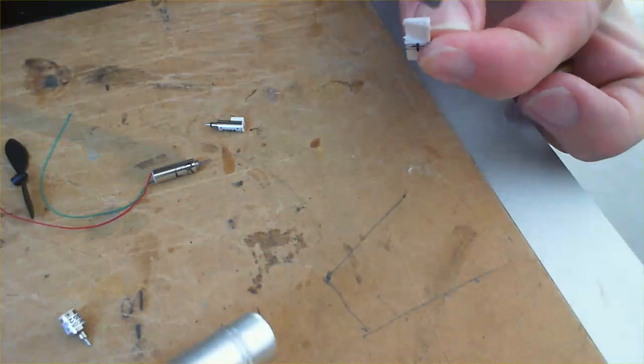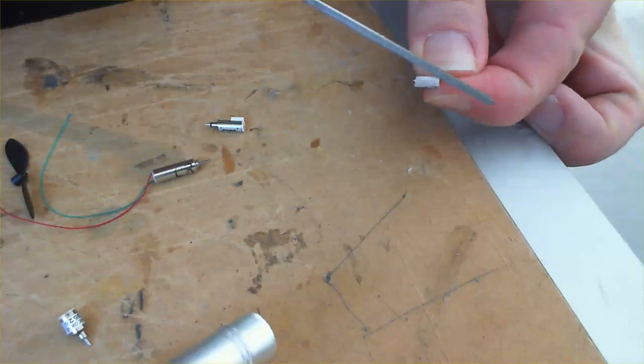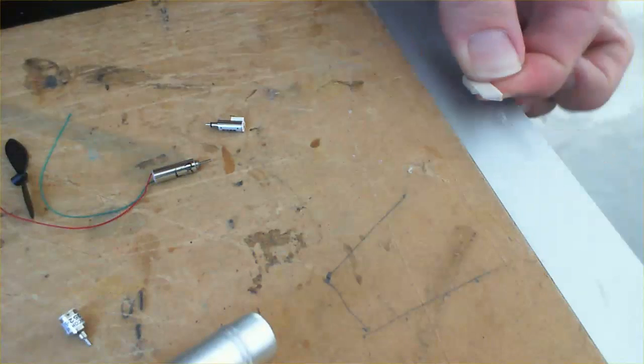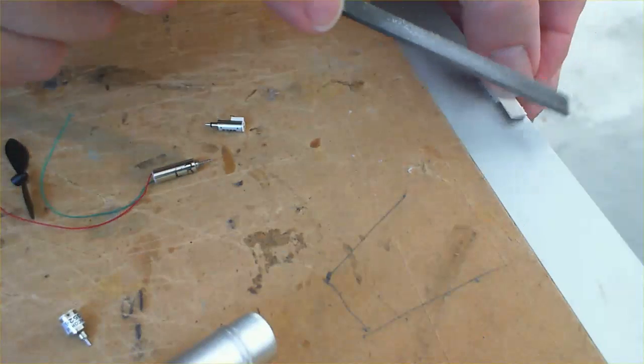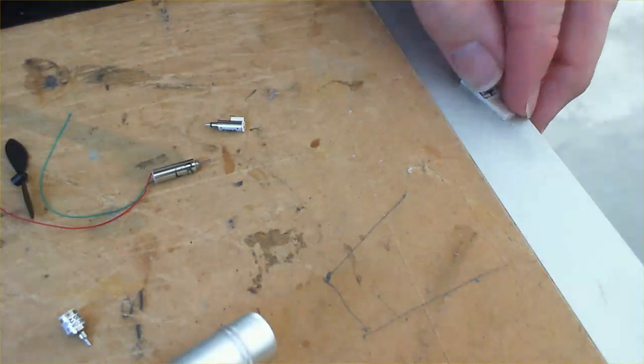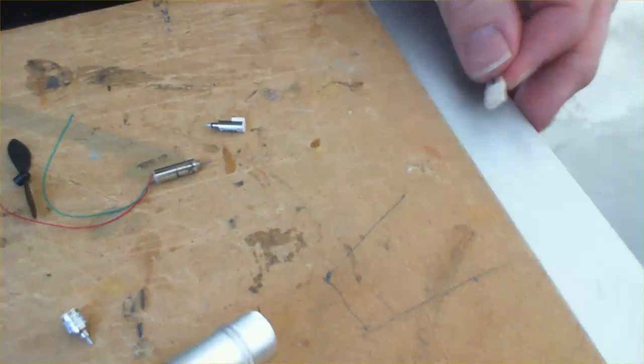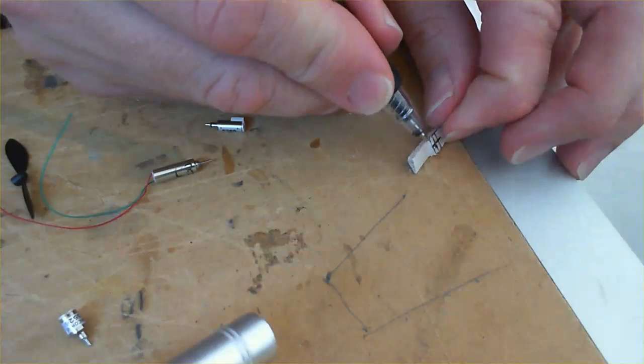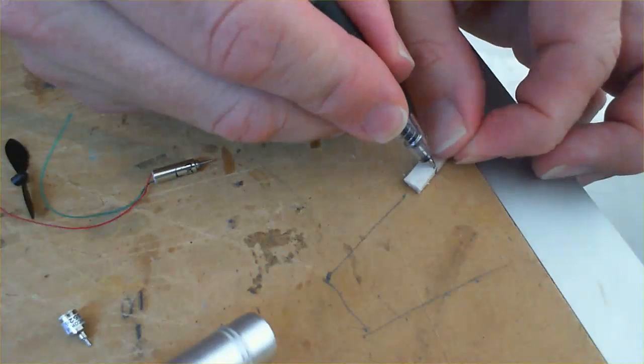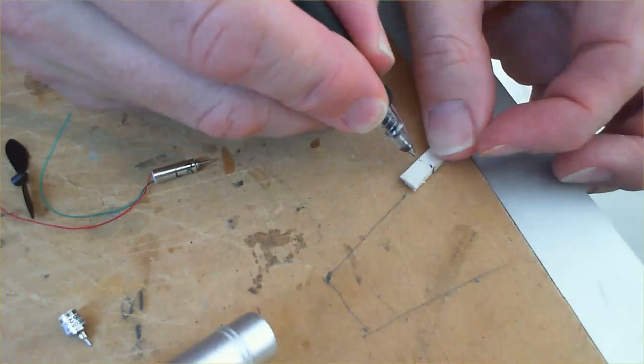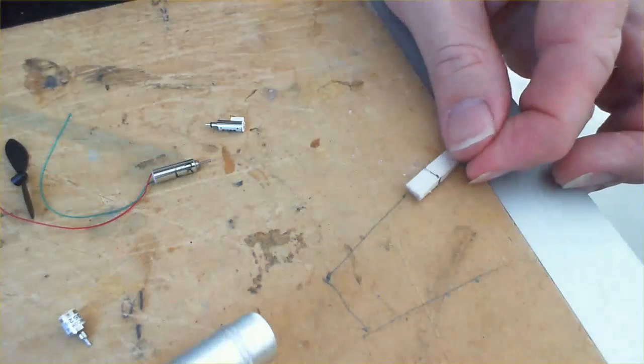We'll turn it over now. And we're now going to file down this edge here to get the other one. And it'll help if you just take those lines and just extend them onto the back of the propeller just to give yourself a guide.